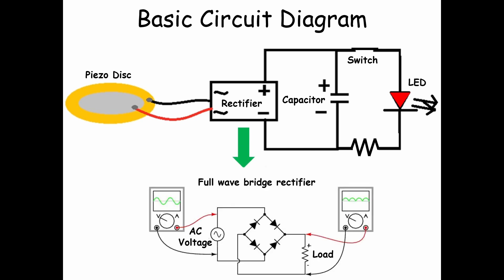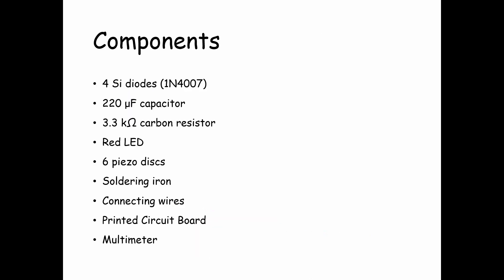This is the design for a full wave bridge rectifier, which requires four diodes to convert AC signal into DC signal. This is the list of components used: four diodes for the bridge rectifier, a capacitor for storing charge, a resistor for discharge, and an LED which lights up. Six piezo discs have been used in a series-parallel combination for better output. And of course, soldering iron, wires, printed circuit board, and multimeter.